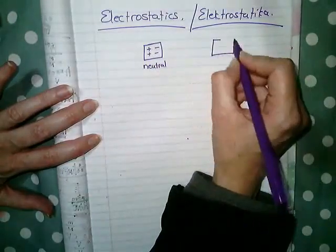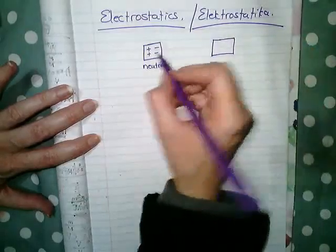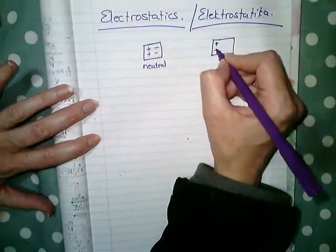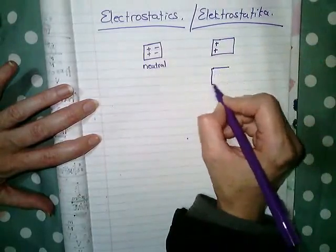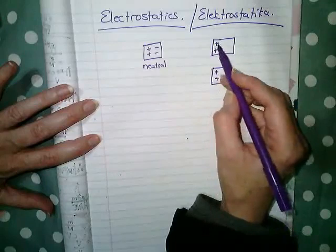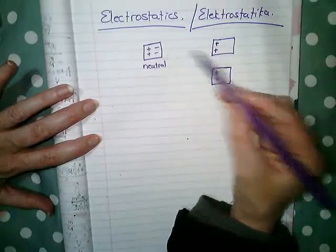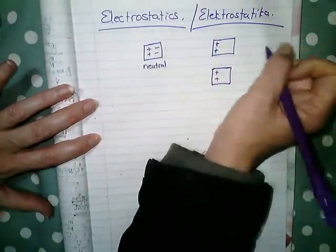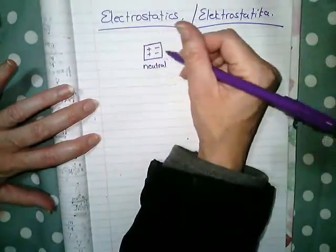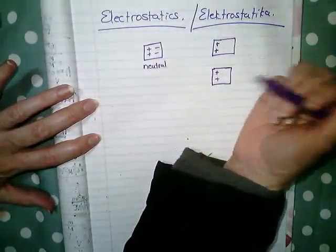So a voorwerp is neutral wanneer hy evenveel positive en negative ladings het. Now, positive ladings kan nie verweider word uit enige voorwerp uit nie. Positive charges cannot be removed from any object. Only negative charges can be removed or can be added.